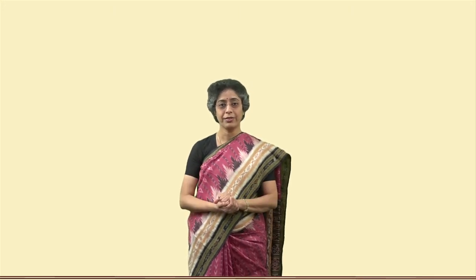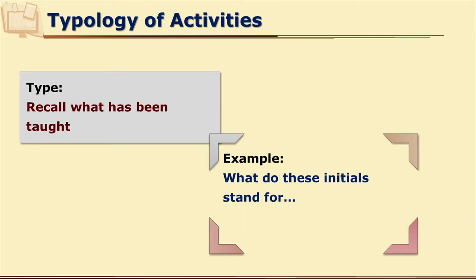All these experiences will keep them active, give them a chance to explore more, and give them a chance to apply whatever knowledge they are acquiring. Roundtree has given a nice typology of these activities. Let us understand from what Roundtree has given. One type can be report on own observations or experience — learners can write from their own observations and experiences, such as recalling some occasions when they found this. It can also be merely recalling what has been taught.